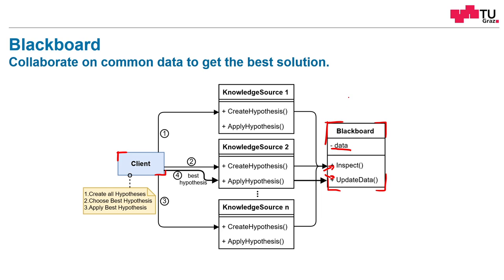The idea is to let several competing nodes work either against each other or in collaboration with each other, but all of them access this common data store. In the end, the one with the best data, the one with the best performance, wins — and this is the one which will get selected by the client.